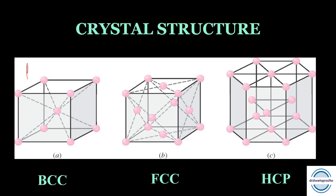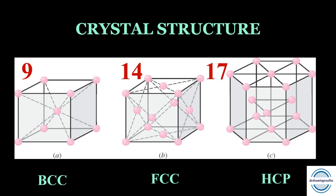In the BCC arrangement, the cubic arrangement has nine atoms. The main characteristic is strength and difficulty with which materials are worked when cold. Examples are iron, molybdenum, and chromium. FCC is a face centered cubic arrangement with 14 atoms; these materials are plastic and malleable. Examples include iron, aluminium, nickel, copper, and platinum. HCP is the hexagonal closed packed arrangement with 17 atoms; these are non-plastic and must be heated before they can be worked. Examples are cadmium, cobalt, bismuth, and magnesium.